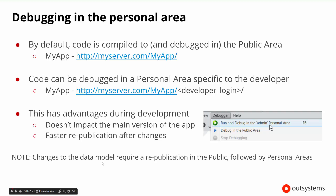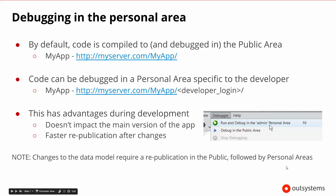If you make changes to the actual data model, you have to republish all of the code for the public area and then go back into the personal area. The only way you can get to run and debug in your personal area is from the debug menu at the top of our development environment.